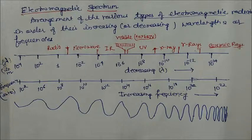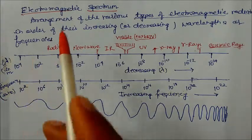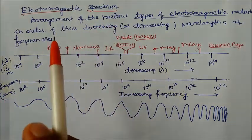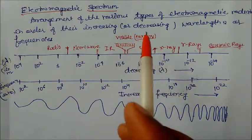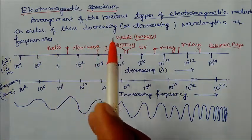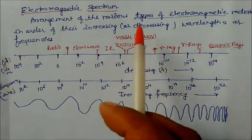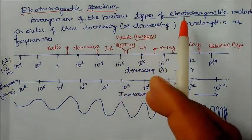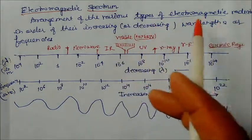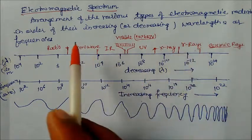In this lecture we are going to discuss the electromagnetic spectrum. The spectrum is an arrangement of the various types of electromagnetic radiations in order of their increasing or decreasing wavelength or frequency.